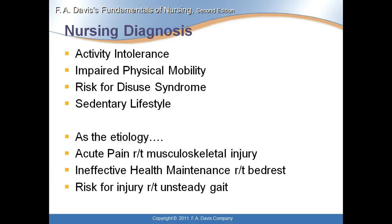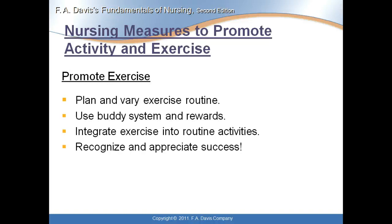Nursing diagnoses include activity intolerance, impaired physical mobility, risk for disuse syndrome, and sedentary lifestyle. Related causes include acute pain related to musculoskeletal injury, ineffective health maintenance related to bed rest, and risk for injury related to unsteady gait. Nursing measures to promote activity and exercise include planning a varied exercise routine throughout the day so patients don't tire as easily, using the buddy system and rewards, and getting help from family and friends so they can assist the patient at home with range of motion exercises or ambulation.